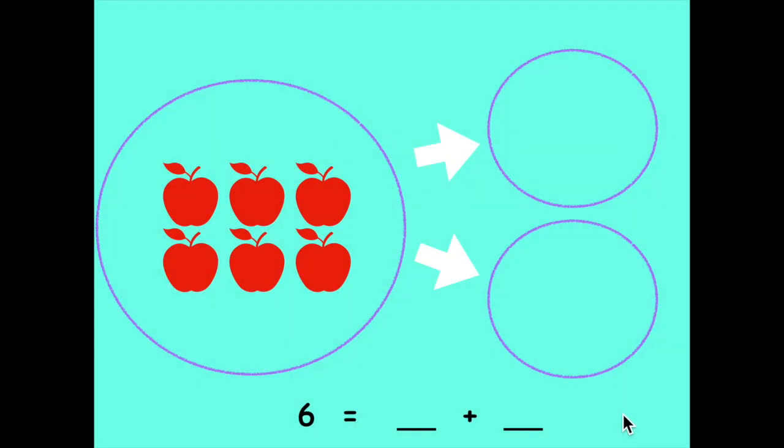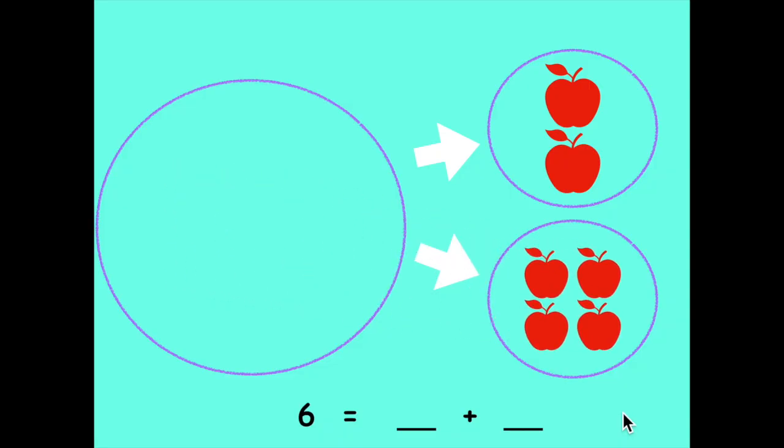Let's try this again. I have 6 apples. But I want to break them apart differently. How would you break them apart? You could put 2 apples in the top circle and 4 apples in the bottom circle. As long as you use all of the apples, you broke them into two groups. 6 equals 2 plus 4.